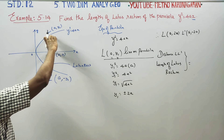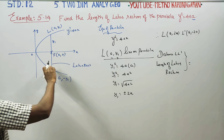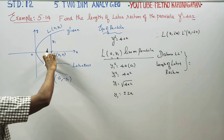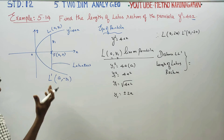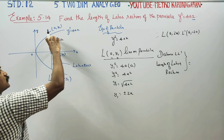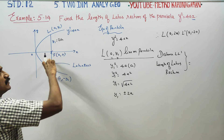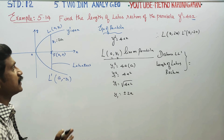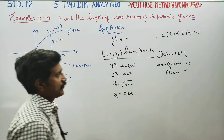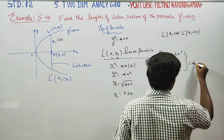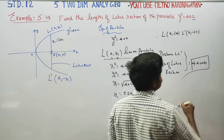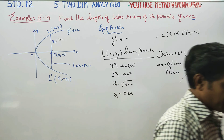The distance from the x-axis to L is 2a, and the distance from the x-axis to L' is also 2a. So 2a + 2a = 4a. Therefore the length of the latus rectum LL' is 4a units. The length of the latus rectum of the parabola is 4a.